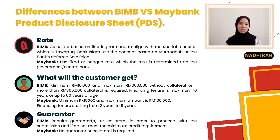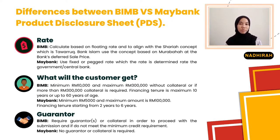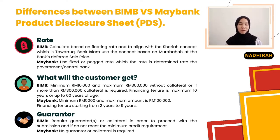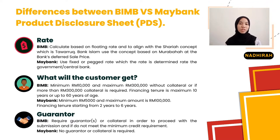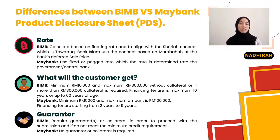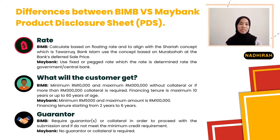The first difference is in terms of rate. Bank Islam Personal Financing i-Facility is an unsecured or secured term financing calculated based on a floating rate, meaning the rate is determined by the private market through supply and demand. To align with the Shariah concept of Tawarruq, Bank Islam uses the concept of Murabaha, which is cost plus profit at the bank's deferred sale price. While Maybank Berhad uses a fixed rate, which is determined by the government or central bank, linked to currency stability.